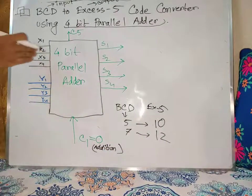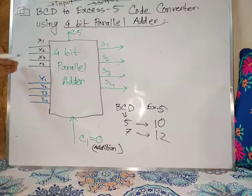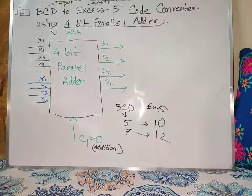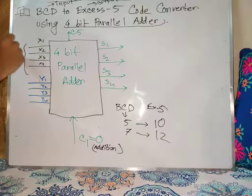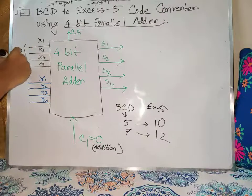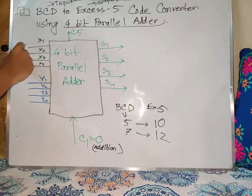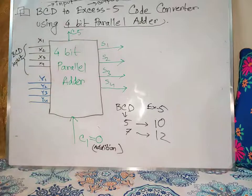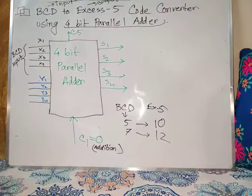BCD is the input. XS3 is the output. We need to do BCD input. This is the BCD input. When we know that BCD is basically 4-bit, this will be just the 4.